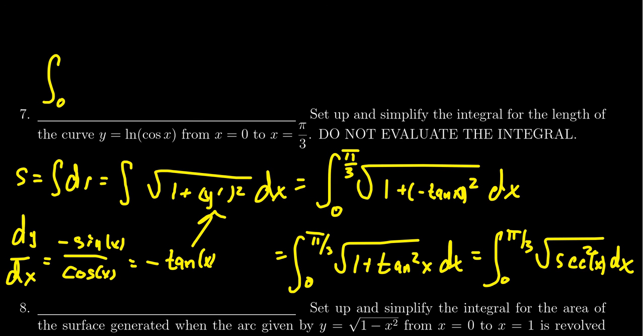We would integrate from 0 to pi thirds of the function secant, for which we can talk about the antiderivative of secant if we wanted to. But again, this just asks us to set up and simplify, do not evaluate it. And so our simplified version, without actually evaluating the antiderivative, would be this integral from 0 to pi thirds of secant x dx.